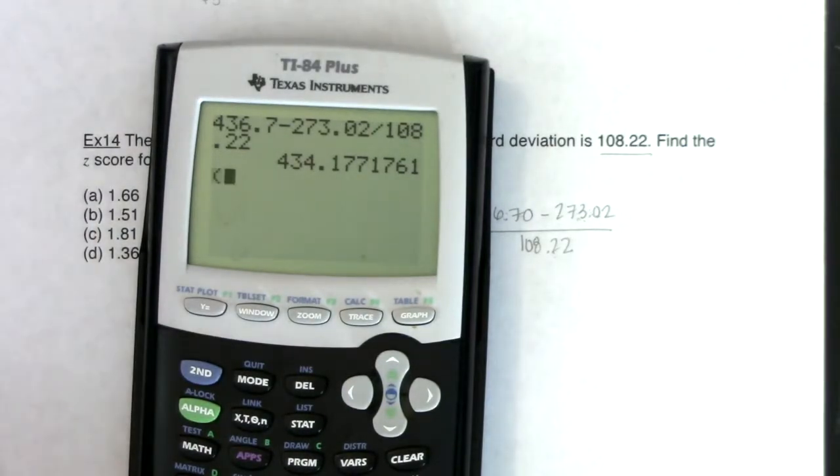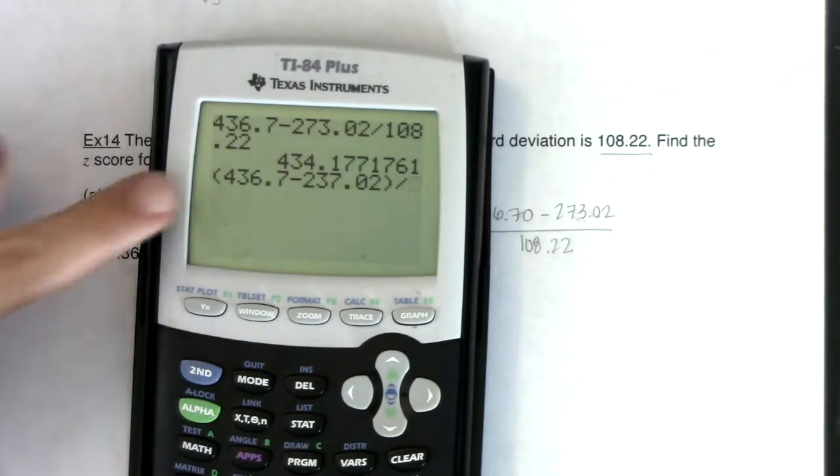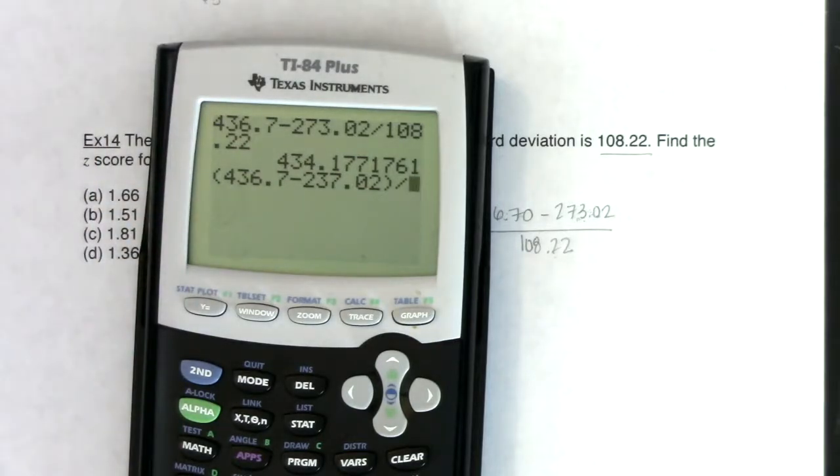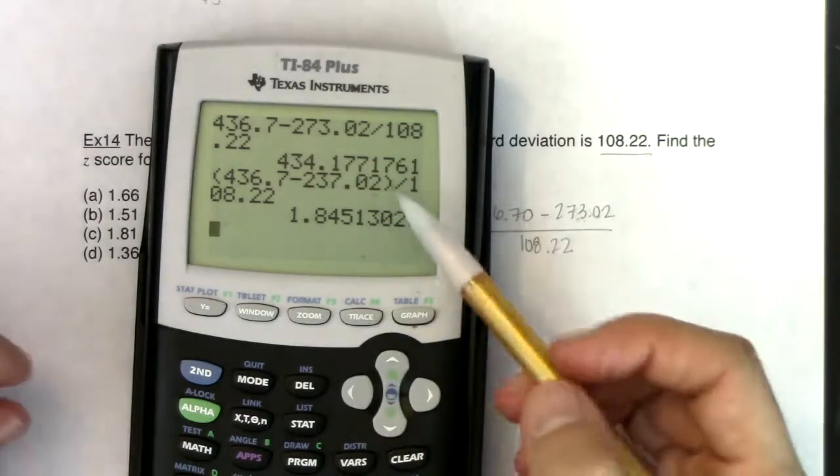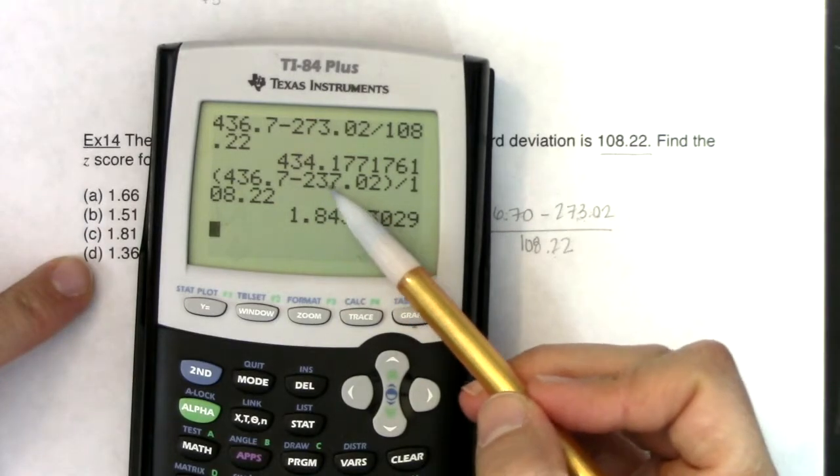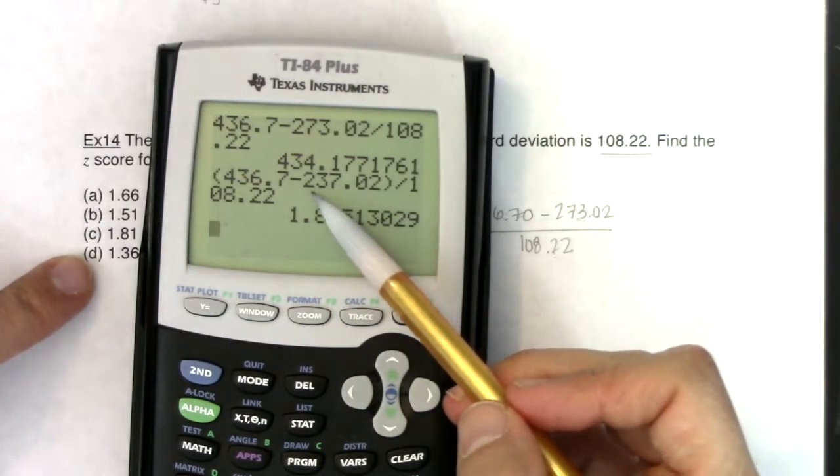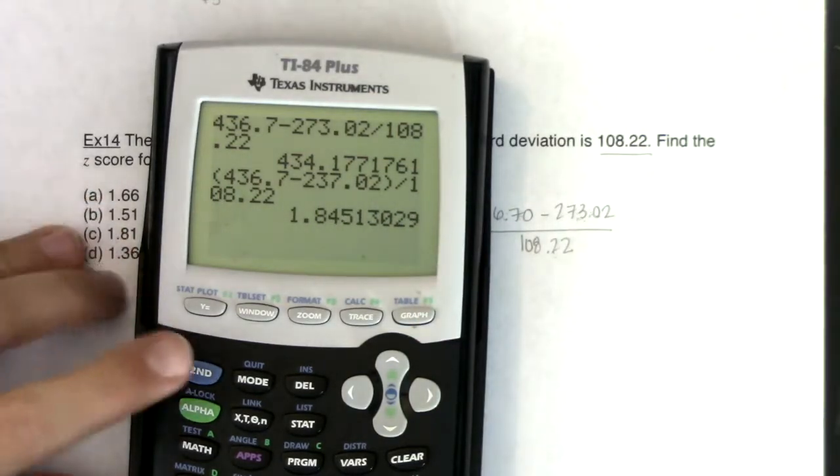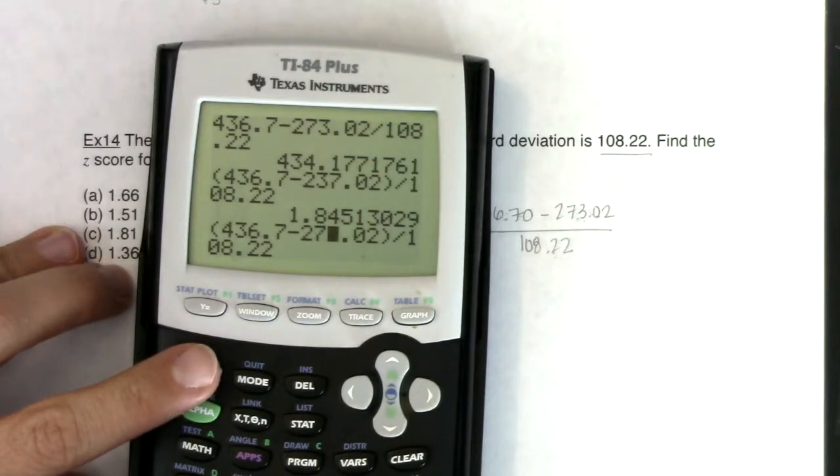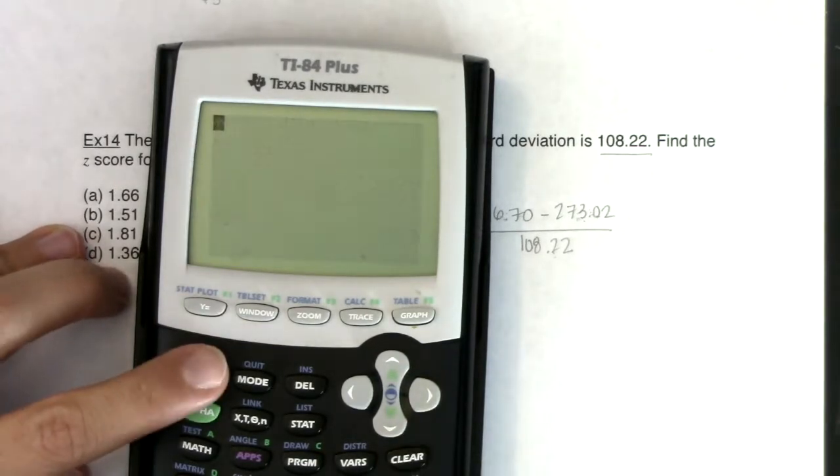And what you want it to do is you want it to do the numerator first. You want to find out what was this deviation, and then put it in the same ratio to the standard deviation. But your calculator is only dividing 108.22 into 273. It's not doing it into the 436 number. So you have a couple of options. You can put parentheses around that numerator. And that will tell your calculator to do the parentheses first. PEMDAS, we're doing parentheses first. And you will get the correct answer. 1.845 is what I'm looking at. I see it, because I didn't see 1.845 here. I transposed this. I have 237.02. So what I want to do, I'm going to re-enter that, but I'm going to change this to 273.